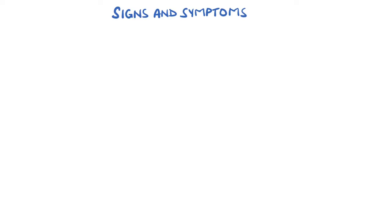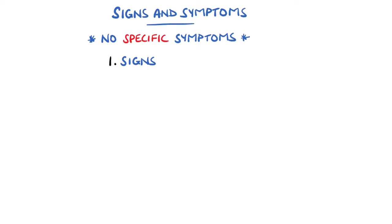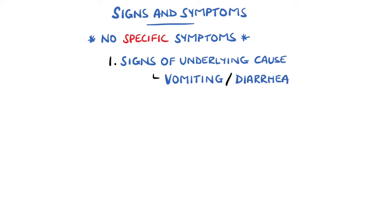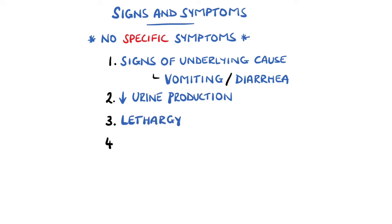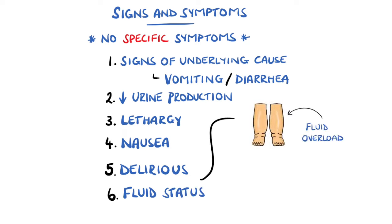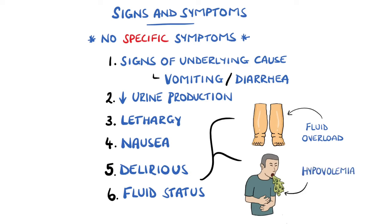There are no specific signs and symptoms of an acute kidney injury, although there may be signs of the underlying cause, such as the presence of vomiting and diarrhoea in cases caused by gastrointestinal losses. Urine production may provide a clue, including looking at the pattern and timescale of the reduction in urine production. Alongside this, there can be general symptoms of lethargy, nausea, and even delirium. Patients may present as being hypovolemic, but can also present with fluid overload, in which case there may be a reduction in cardiac output causing the reduced renal function.